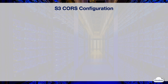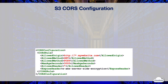You can configure an S3 bucket to allow cross-origin requests with a CORS configuration. CORS configuration is an XML document with rules that identify the origins and request methods which are allowed to access your bucket. You can enable CORS through the AWS console, API, or SDK. You can add up to 100 CORS rules to the CORS configuration.